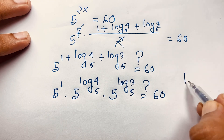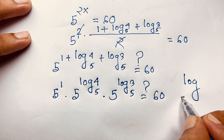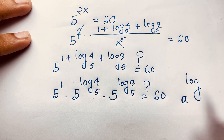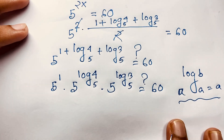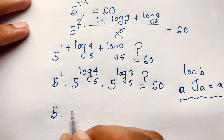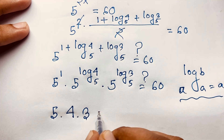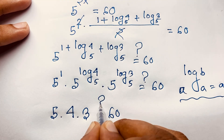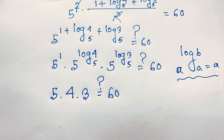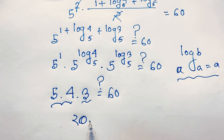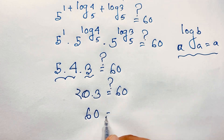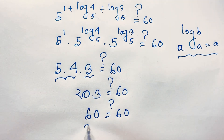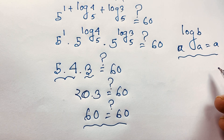Applying the identity that a to the power log base a of b equals b, we get 5 times 4 times 3, which equals 60. So 60 equals 60 — the left-hand side and right-hand side are equal. Our answer is verified for this math Olympiad question.